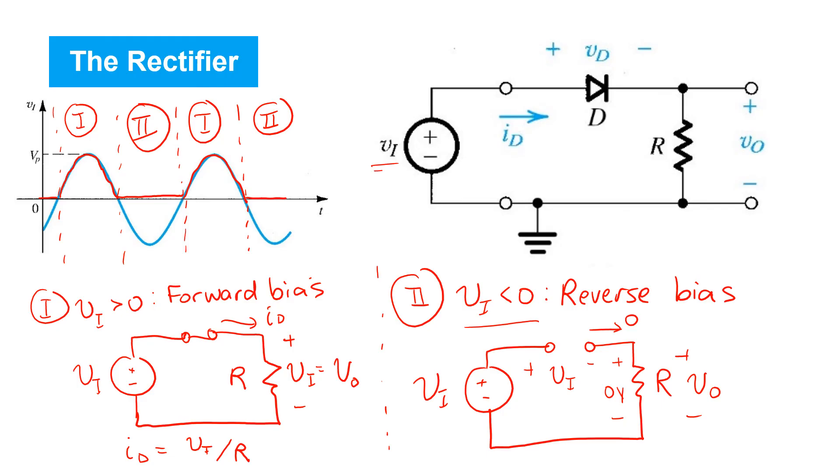However, the output voltage signal that arises at vo does have some average non-zero dc content. So therefore, circuits like this are sometimes used to create dc power supplies from ac power supplies.